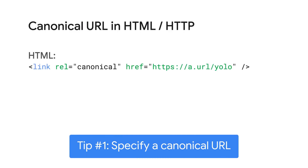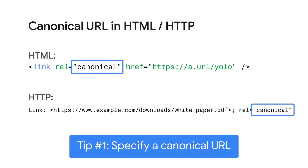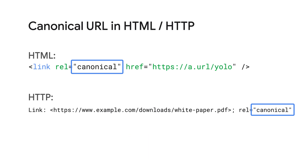You can specify the canonical URL with this tag to help Google Search decide which of the possibly many URLs to index for this page. Note that this tag is often used incorrectly by website owners, so Google Search can't rely on it and treats it as a hint, but might choose a different URL anyway. More on that later. To fix this and get another URL indexed, you can specify the canonical URL in the HTML tag, or an HTTP header as we've seen in the previous slide.